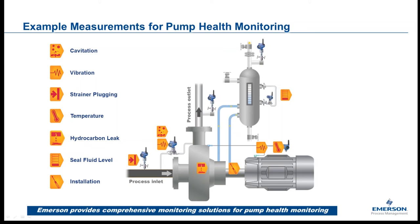Not all pumps have suction strainers, but for those that do, a wireless differential pressure transmitter can replace the locally-reading gauge to signal when the strainer needs cleaning — with that information directed to the maintenance shop. Bearing temperatures and motor winding temperatures can be sensed as leading indicators of problems. Hydrocarbon leak detectors mounted below the pump seal will alert when the area becomes wet with hydrocarbons. Combined with seal fluid level and the vibration transmitter detecting misalignment or installation defects, Emerson provides a fairly comprehensive pump health monitoring solution.